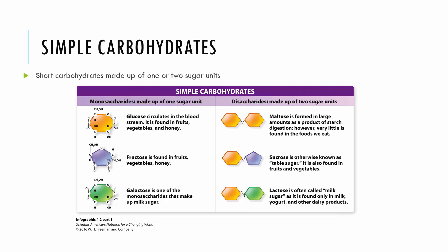We define carbohydrates as simple or complex. Simple carbohydrates are short carbohydrates made of one or two sugar units. There are three major monosaccharides: glucose, which is the form of carbohydrate that circulates in our blood and is also found in fruits, vegetables, and honey; fructose, also found in fruits, vegetables, and honey; and galactose, which is the one that makes up milk sugar.